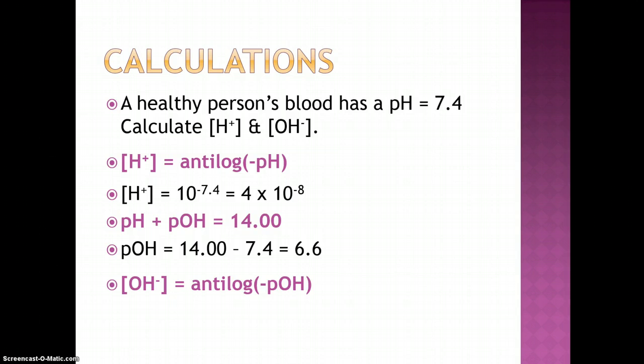We can now very easily calculate the hydroxide ion concentration by taking the anti-log of the negative pOH, which is equal to 2.5 times 10 to the negative 7 molar. We can now see that by having one of the values, we are able to calculate all three of the unknown values.